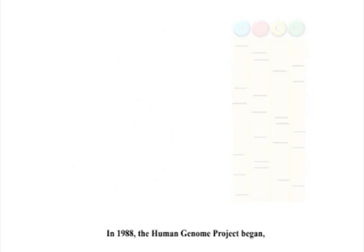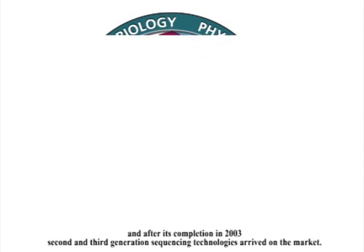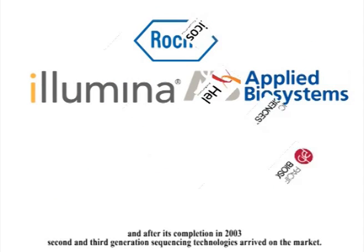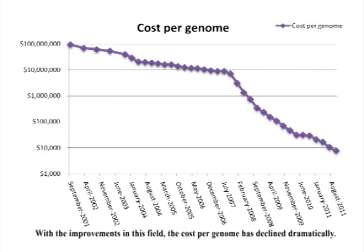In 1988, the Human Genome Project began, and after its completion in 2003, second and third generation sequencing technologies arrived on the market. With the improvements in this field, the cost per genome has declined dramatically.